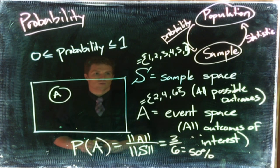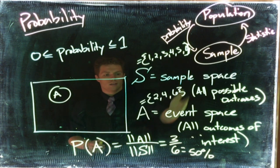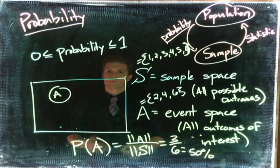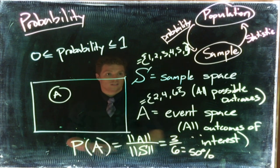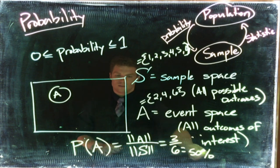We're diving into looking at our sample space and event space and seeing what is the probability of the next event happening. And so for this example that we had, the probability of rolling an even number on a fair six-sided dice is 50 percent.